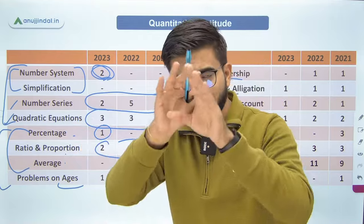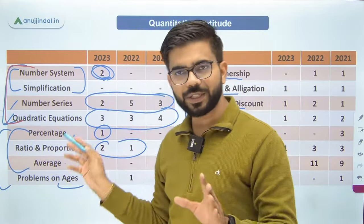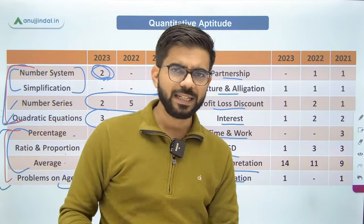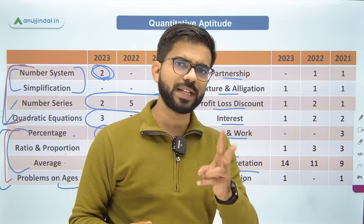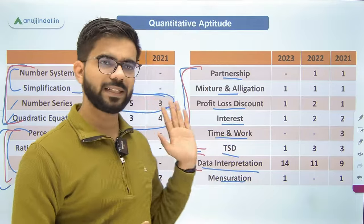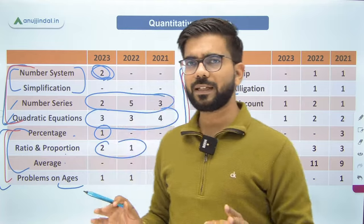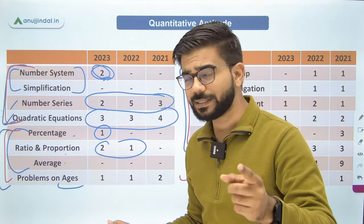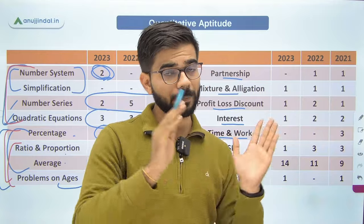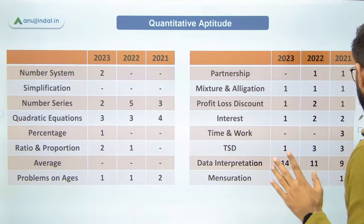You can divide the Quant syllabus into segments: Quick Maths, from which around 7-8 questions are asked; Arithmetic, from which around 11-12 questions are asked; and Data Interpretation, from which around 10 questions are asked — generally 2 DIs. Mensuration also appears occasionally. Do not get the wrong message that some arithmetic topics are more important and some less — more or less all arithmetic topics are important. Cover the syllabus comprehensively, because many candidates make the mistake of not doing so.